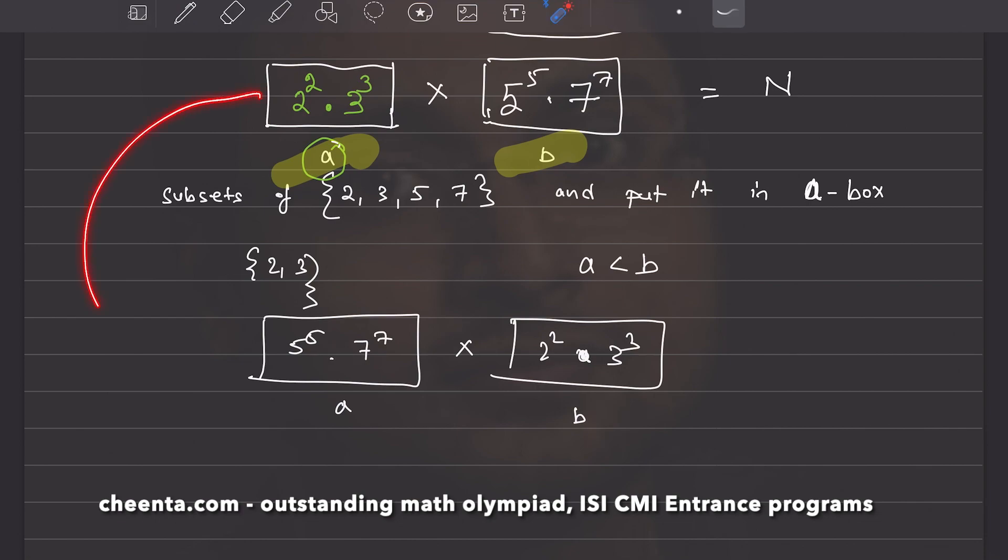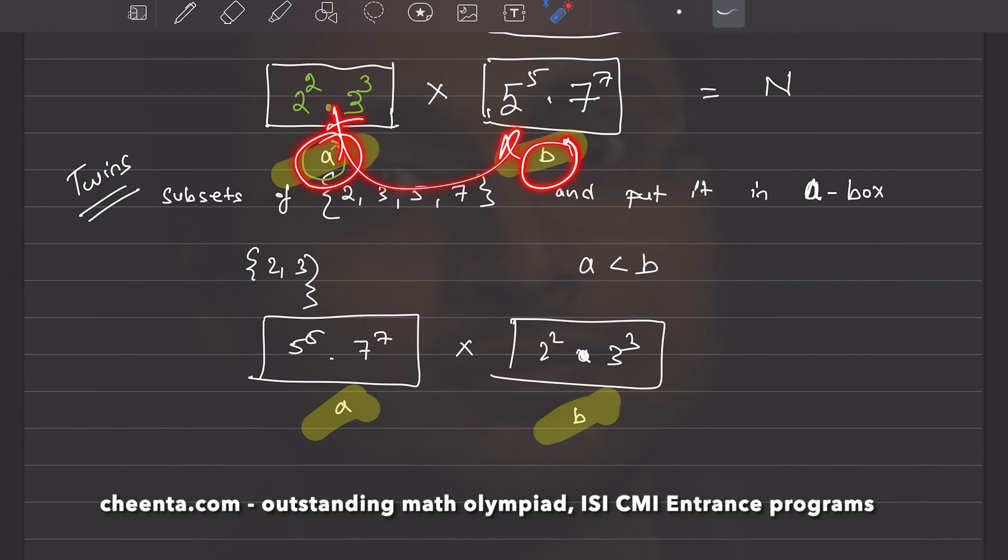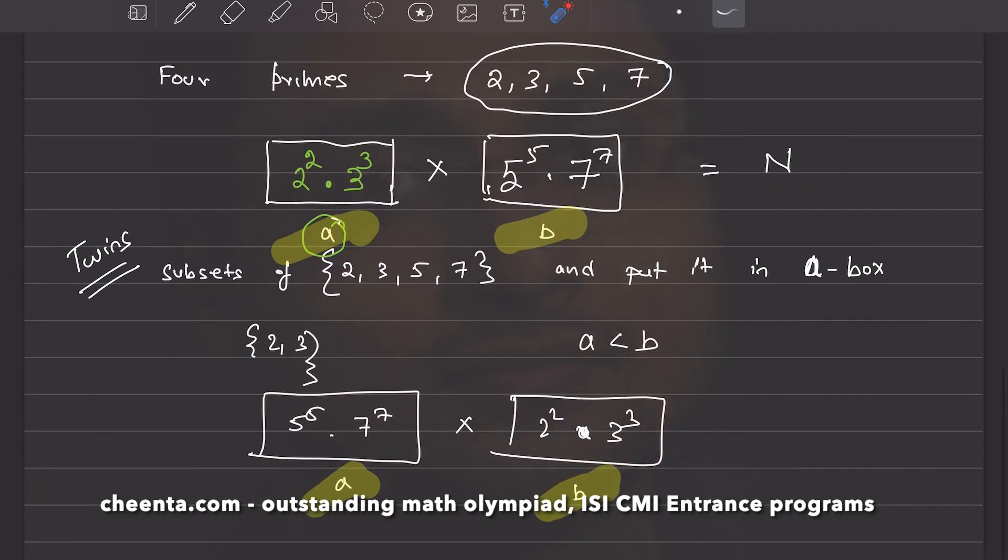These two cases are exactly twins of each other. And we have to count only one of them, because in one of them, a is smaller than b. In the other one, a would be larger than b. So, in every duplet of these two cases, I have to count only one case. Because in one of the two cases, a will be smaller than b. When we switch it, a will become larger than b, so we will not take that case.